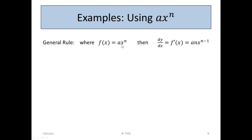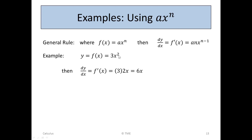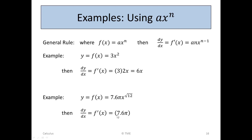Examples using ax to the n, where you've got a coefficient — we would work like this. If y equals 3x squared, dy/dx: the first thing we do is keep the 3, because it's going to be 3 times whatever it will be. Take down the 2, so it's 3 times 2x, which is 6x. Similarly, for y equals 7.6π times x to the root 12, the 7.6π is just a coefficient that remains in the derivative. So dy/dx is 7.6π times root 12 times x to the root 12 minus 1.